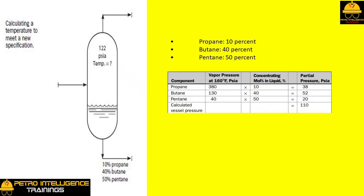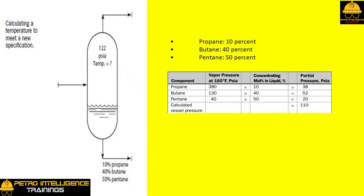Adjusting temperature to meet a product specification: let us assume that a new set of product specifications has just been issued to your shift. The liquid from the flash drum shown in picture has too much propane. The new liquid specification is propane 10 percent, butane 40 percent, pentane 50 percent. The pressure in the drum is still fixed at 122 psia, so it seems as if we will have to run the drum hotter. But how much hotter temperature?